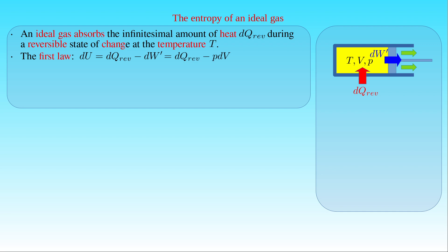Then we can express the absorbed heat dq_rev as the differential of the internal energy U of the gas, plus its pressure P times the differential of its volume V. For the reversible expansion of the gas, the second law of thermodynamics tells us that the differential of the entropy S of the gas is equal to the ratio of dq_rev to the temperature T of the gas.